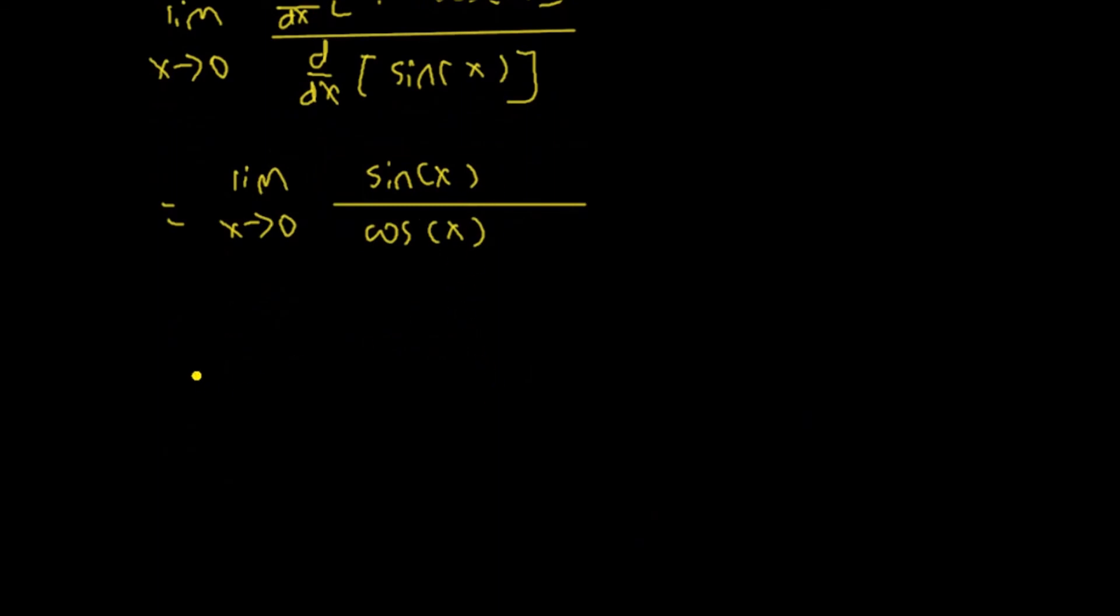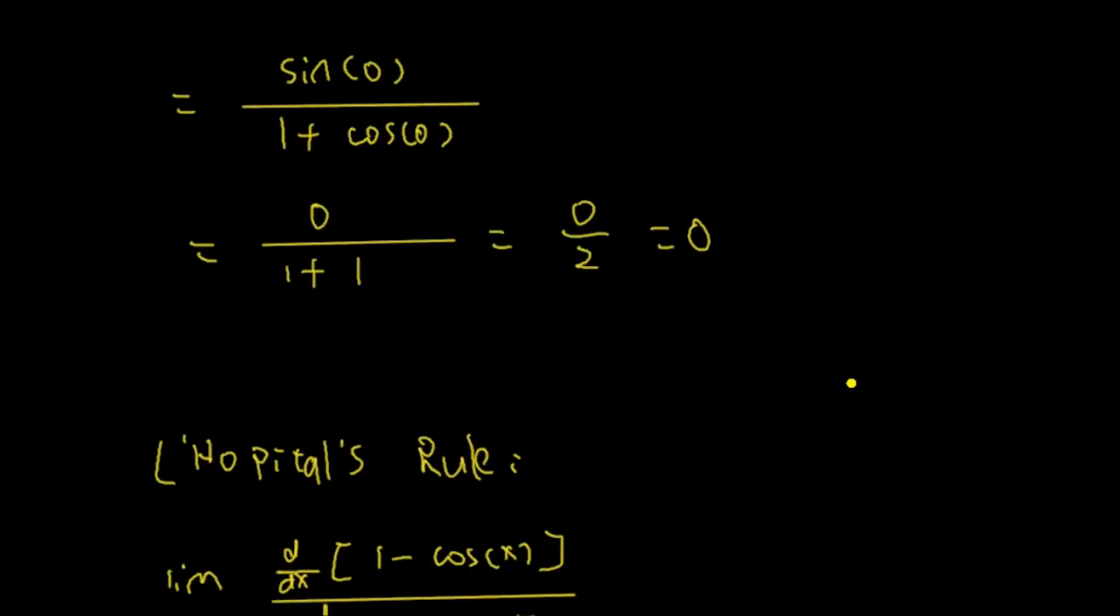Now, we can just put 0 into x here. Sine 0 over cosine of 0. We know that sine 0 is 0, cosine 0 is 1. 0 over 1 is 0. We get the same answer here. 0 and 0.